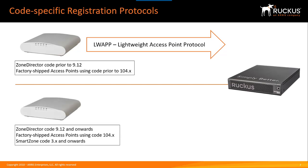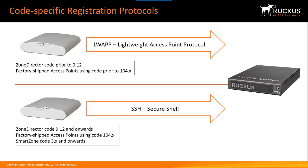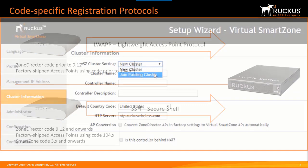If we have Zone Director code 9.12 or greater, or a factory-shipped AP using code 104.x or greater, and SmartZone code 3.x or greater, those will use SSH — the secure shell protocol — to register with the SmartZone network controller. The controller by default only listens for and registers APs using SSH, but we do have a mechanism to allow the controller to also listen to LWAP and register those older APs.